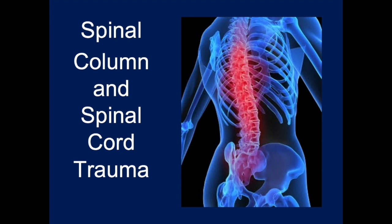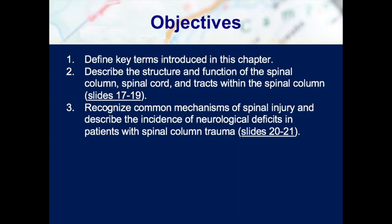Hi, everyone. This lecture is going to cover chapter 32, and we'll be talking about the spinal column and spinal cord trauma. Here's your list of objectives for the lecture. This lecture is going to cover the anatomy of the spinal column and the spinal cord. We're going to talk about the common mechanisms of spinal injury, the signs and symptoms of spinal injury, and also the treatment of these patients.